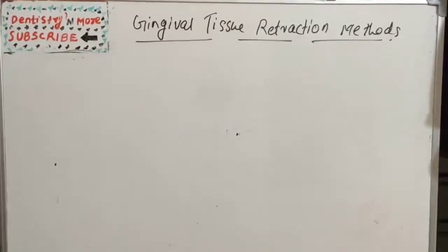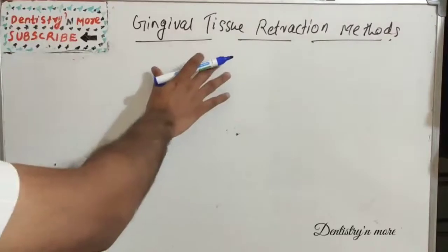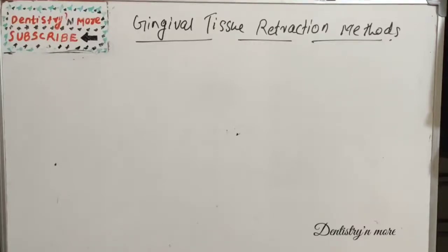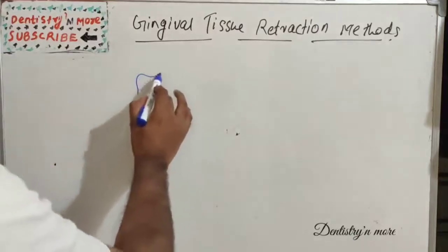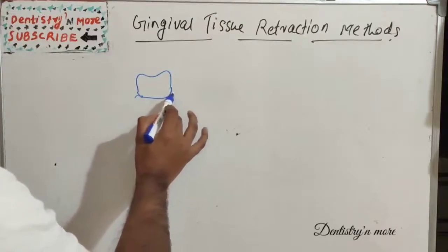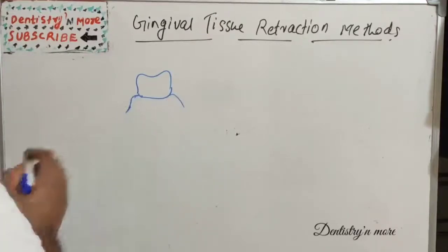Hello everyone, welcome back to another session in Dentistry and More. Today's topic is gingival tissue retraction methods. It comes under fixed partial denture. As per GPT, the definition of gingival retraction or displacement is a deflection of the marginal gingiva away from the tooth.